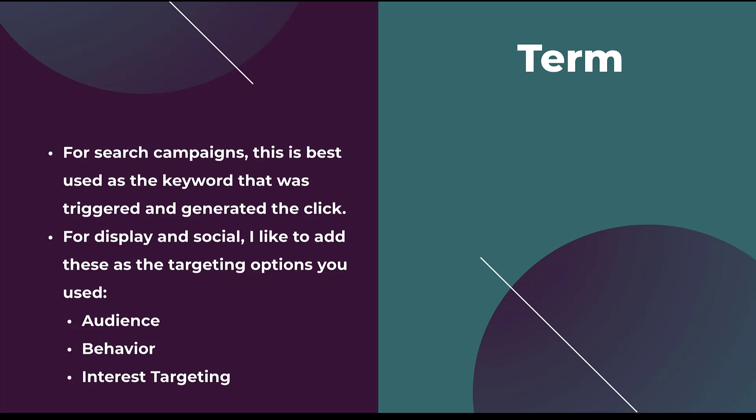Next is the UTM term. For most search campaigns, the default for Google Ads is that it will pull in the keyword itself. One common mistake is that people think it's UTM underscore keyword — it is not. It is UTM underscore term. For any other platform, whether it's display or social, I personally like to use the targeting options that triggered that ad to show. For search, the search query and keyword match is what triggered your ad. So for display and social, I think about what targeting option triggered my ad — was it an audience, a behavior or interest target, and which one was it? I wouldn't put just 'audience' as the UTM term — I would put what that audience actually was.